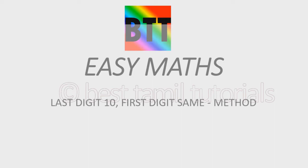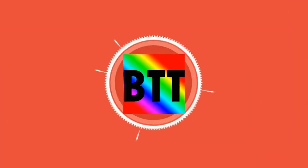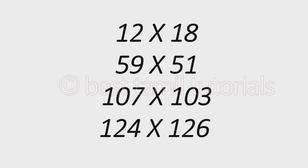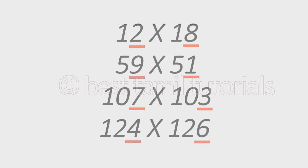The rule is: the last digits sum to 10 and the first digits are the same. For example, if you look at the numbers: the last digit pairs are 2 plus 8, which is 10; 9 plus 1, which is 10; and 7 plus 3, which is 10. That is the condition — the last digits must add up to 10.